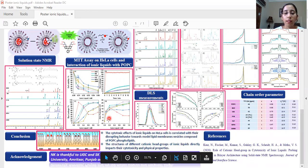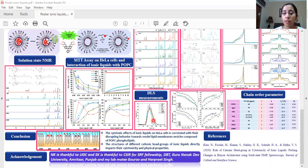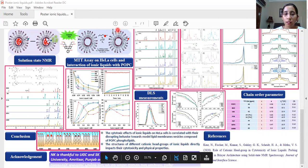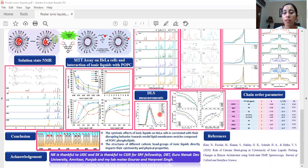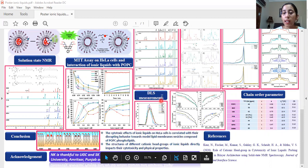DLS measurements however showed that the ionic liquids were disrupting the vesicles but the overall integrity was intact and no new structure was observed in the DLS measurements.